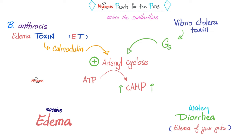Notice the similarities: Bacillus anthracis edema toxin and Vibrio cholerae toxin both stimulate adenylate cyclase, which converts ATP to cyclic AMP. The former causes massive edema in anthrax; the latter causes massive diarrhea, which is essentially edema of your gut. Medicine makes so much sense once you understand it. The moral of the story: cyclic AMP causes edema. We call this secretory diarrhea, not to be confused with invasive diarrhea or osmotic diarrhea.